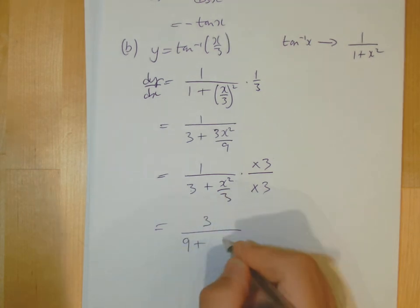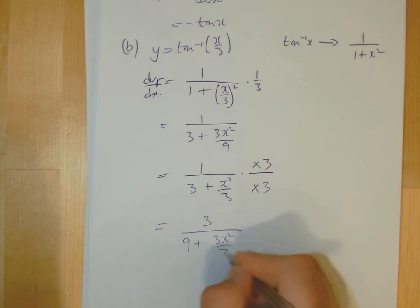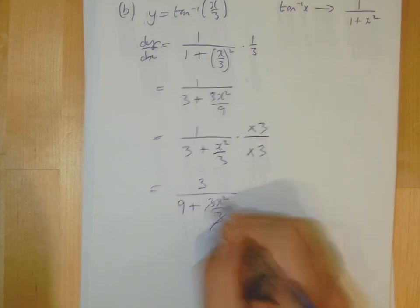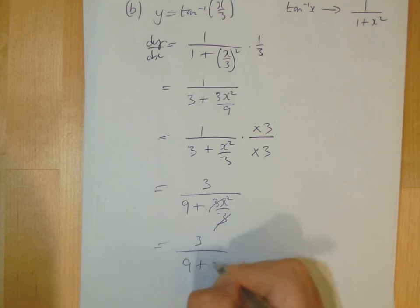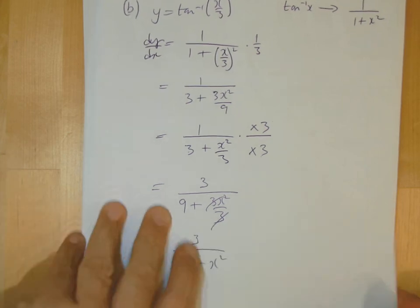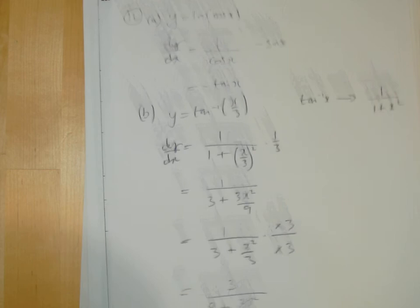And if I times this by 3, I'll get 3x squared over 3, but they will cancel. Then, so I end up having 3 over 9 plus x squared. And that's it then, the question answered.